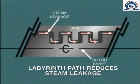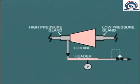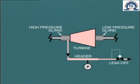Even so, there will still be some leakage of steam at the high-pressure end through the gland seal. This leakage steam is extracted from the gland and fed into a low-pressure extraction point. The leak-off valve automatically adjusts the pressure within the gland steam header to maintain approximately 5 PSIG. But even at that low pressure, there will still be some leakage along the shaft into the turbine room.